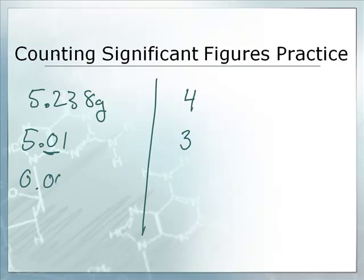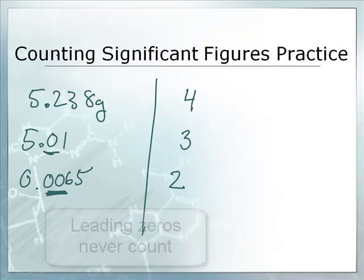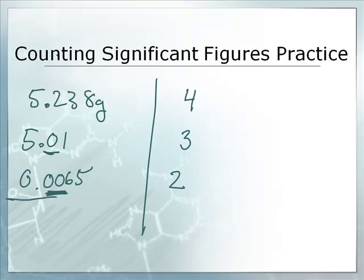What about 0.0065? Well, the zeros there are leading zeros. Leading zeros we never count as significant figures. So the only significant figures here are the 6 and the 5. That's two significant figures. Now be careful - just because we don't consider them significant figures doesn't mean they're not part of the number. This doesn't magically become 65. It's still 0.0065. But in terms of measurement and accuracy we say it has two significant figures.